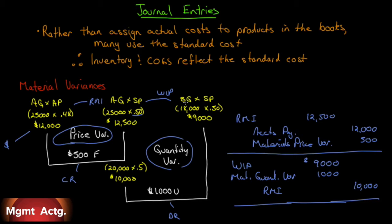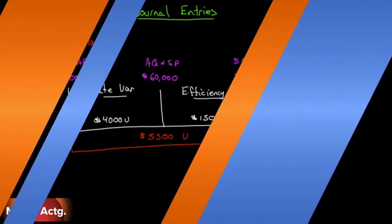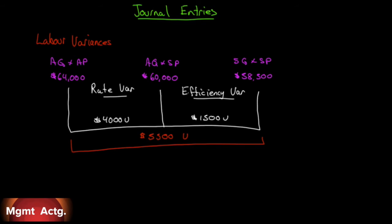Let's look at the labor variances. Our actual quantity times actual price shows we incurred $64,000 in labor expenses. Based on the standard price for the actual quantity, we should have only incurred $60,000, giving a $4,000 unfavorable rate variance. Based on the standard quantity for the output produced multiplied by the standard price, we should have only incurred $58,500 — so we also have an efficiency variance of $1,500 unfavorable, for a total unfavorable variance of $5,500.